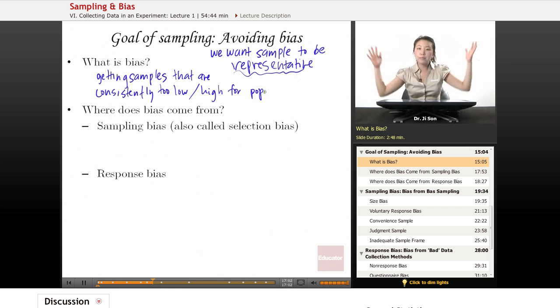What we want from a good sampling method is that those samples, that sampling method, those samples reflect the actual distribution of the population.